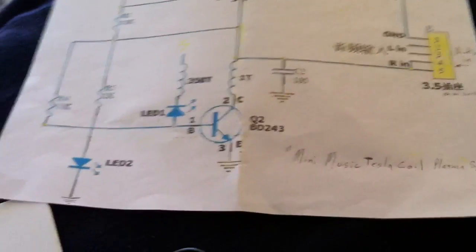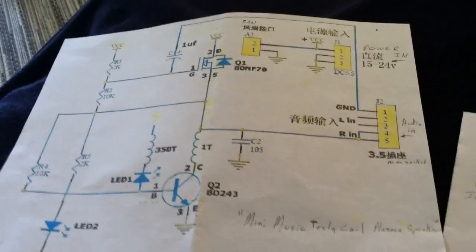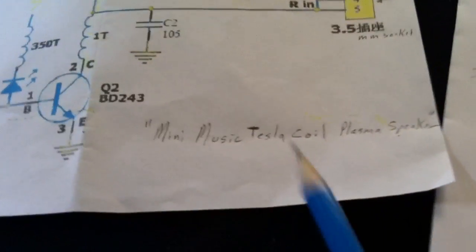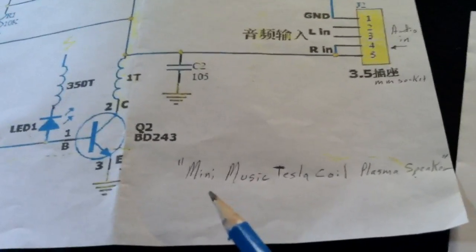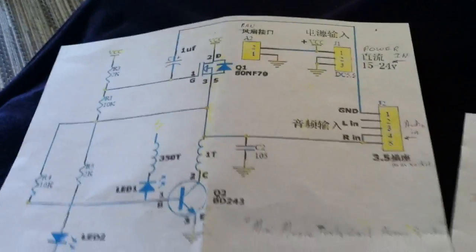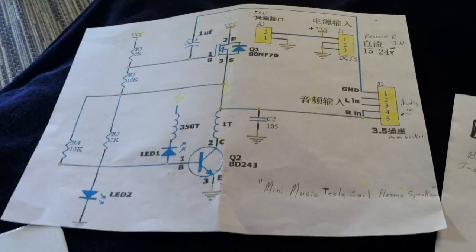Basically I bought this kit and I had to get this circuit diagram off of the internet. The name of the kit I bought was the Mini Music Tesla Coil Plasma Speaker. If you put that in a Google search or just musical mini Tesla coil, you'll come up with where you can buy this thing. You don't pay more than about $10 for it.